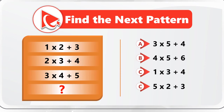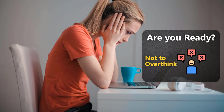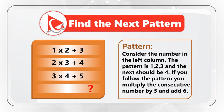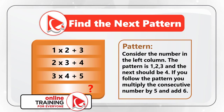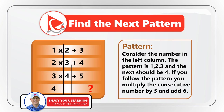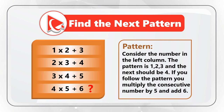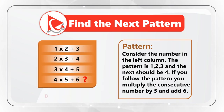The key is not to overthink this problem. To detect the pattern, look at the number in the left column: 1, 2, and 3 — so the next number should be 4. The numbers in each expression also increment by 1 with each operation, giving a final expression of 4 multiplied by 5 plus 6, which matches choice B.